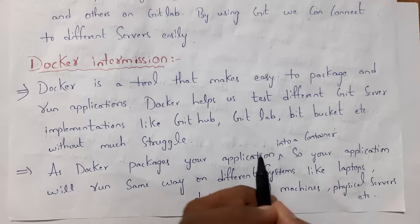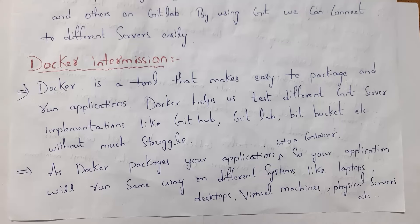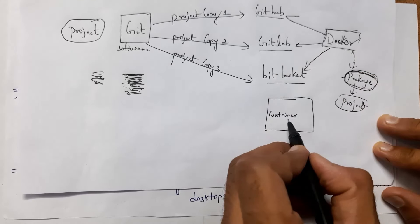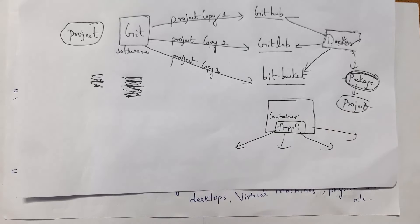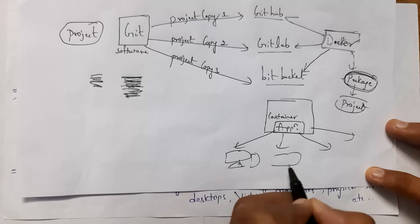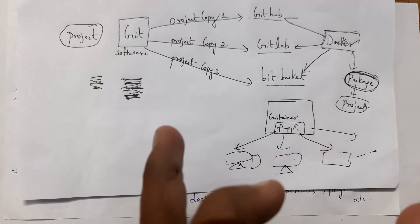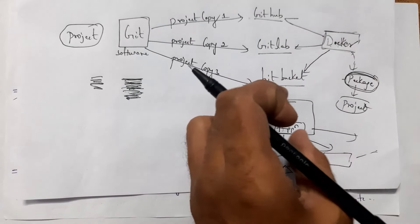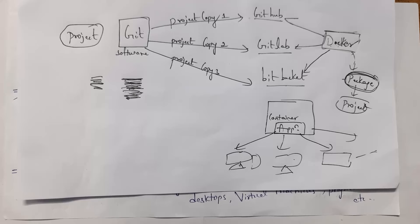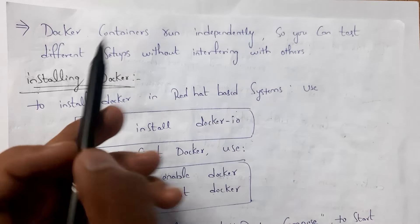As Docker packages your application into a container, your application will run the same way on different systems like laptops, desktops, virtual machines, physical servers, etc. In Docker software there will be Docker containers. Whenever we place our project in a container, all users can access that application — whether using a desktop, laptop, or physical server. Our application will work because we are packaging it and placing it in a container, so whatever system you use, there will not be any problem. Docker containers run independently, so you can test different setups without interfering with others.